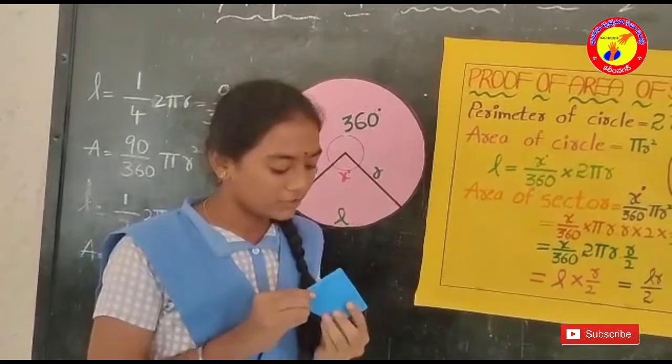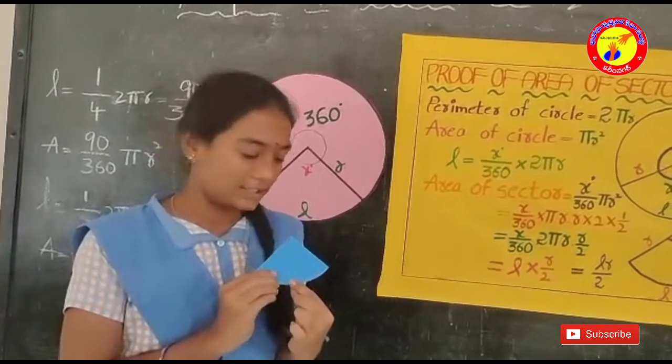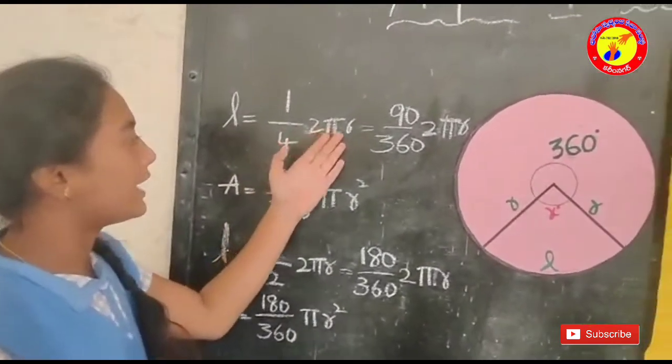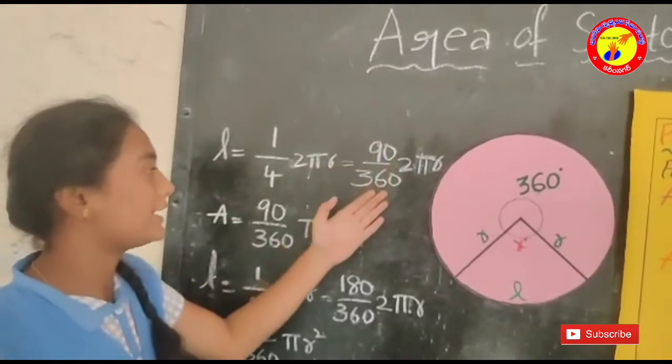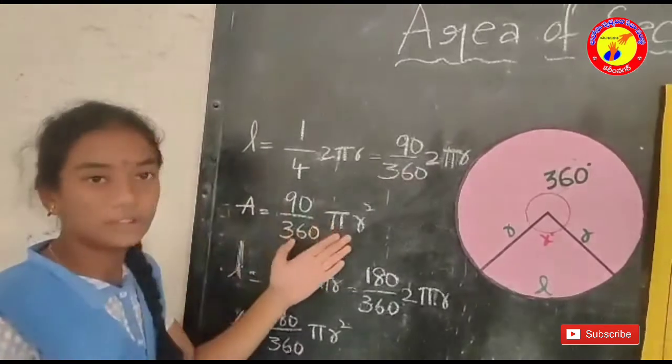If the angle of sector is 90 degrees, it is the 1 by 4 part of the circle. So L is equal to 1 by 4 into 2πR, which is equal to 90 by 360 into 2πR. The area is equal to 90 by 360 into πR square.